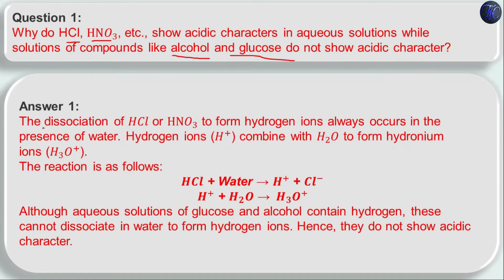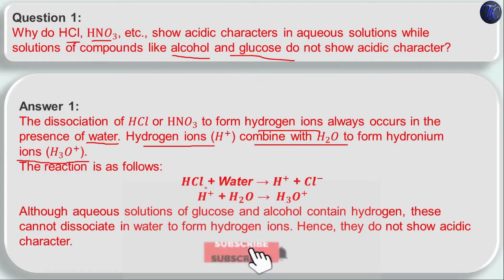The dissociation of HCl or HNO3 to form hydrogen ions always occurs in the presence of water. As discussed in activity 2.9, dissociation only occurs in the presence of water — HCl will not separate H⁺ ions in the absence of water. The H⁺ ion produced then combines with H₂O to form the hydronium ion (H₃O⁺). So when HCl is dissolved in water, it produces H⁺ and Cl⁻ ions, and H⁺ combines with H₂O to form H₃O⁺.